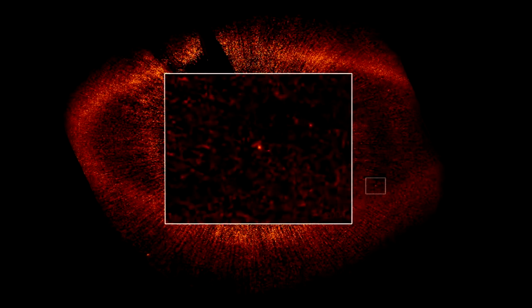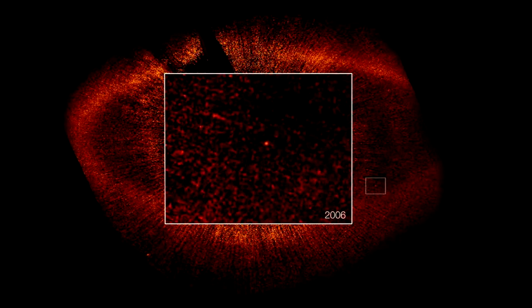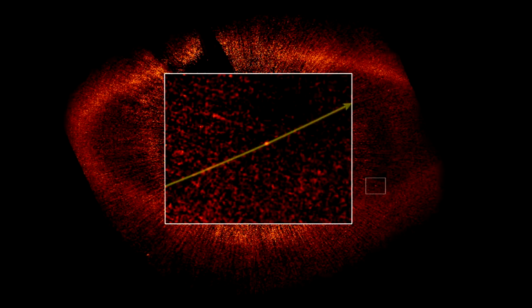Amazingly, Hubble has managed to take a snapshot of this planet not just once, but twice, with almost two years in between. Being able to actually see the same dot of light moving around the central star is a very clear sign that this object really is in orbit, and that it's not just something that happens to lie along the line of sight. Astronomers have calculated that it takes this planet about 872 Earth years to complete one orbit.